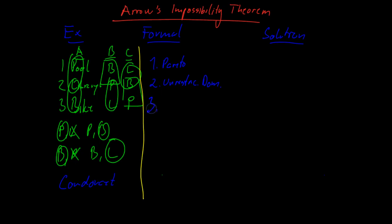The third condition is non-dictatorship. This simply means that there is no one person who will always determine the result of the election. You can't put all the weight on one person and say that his one is going to determine the outcome.